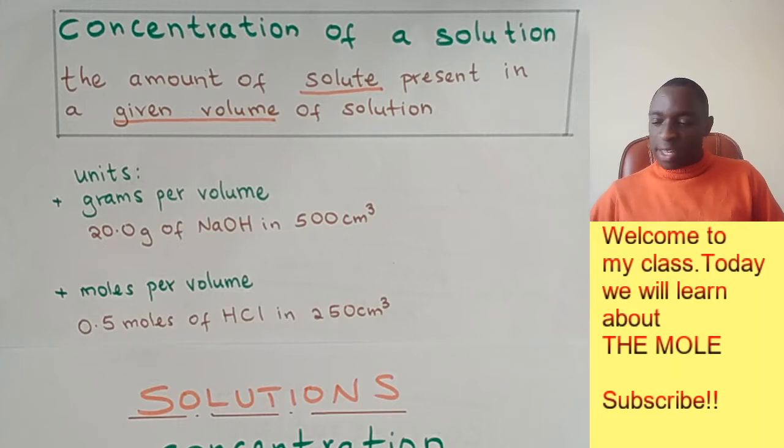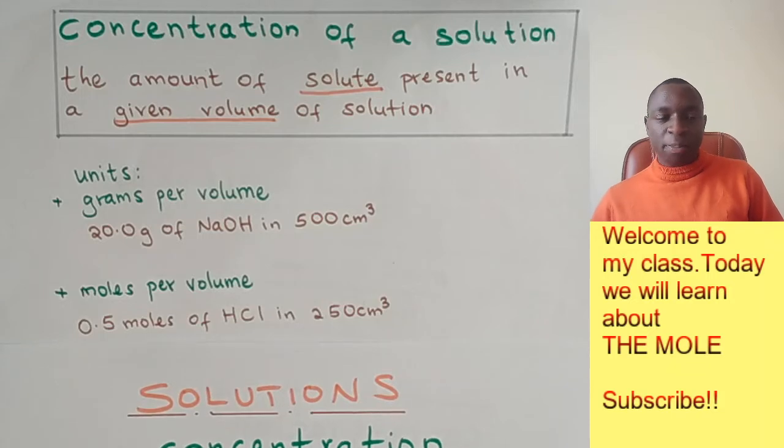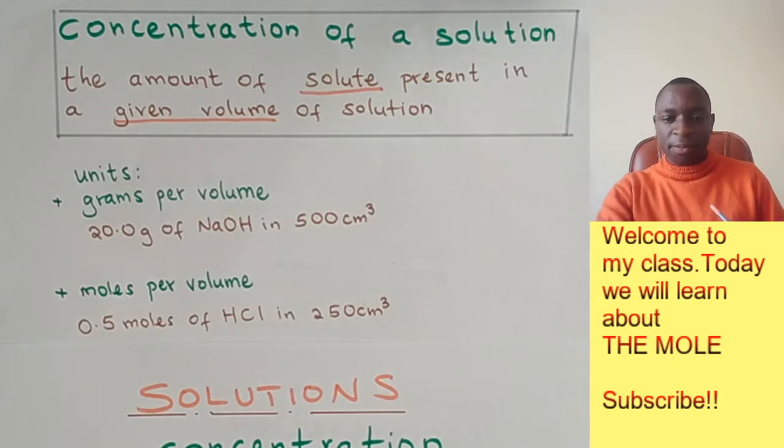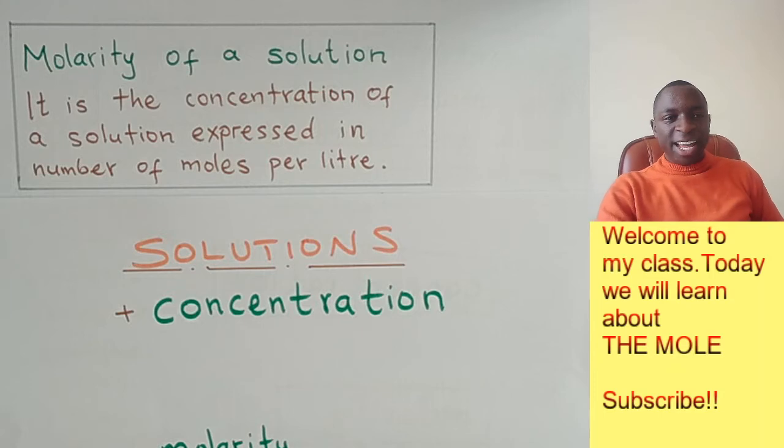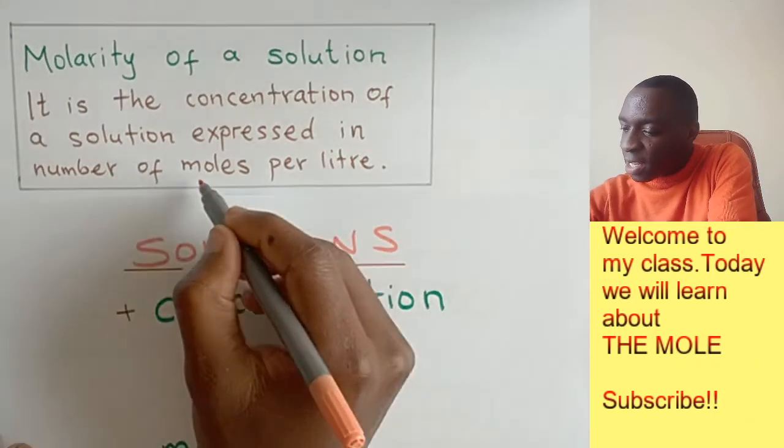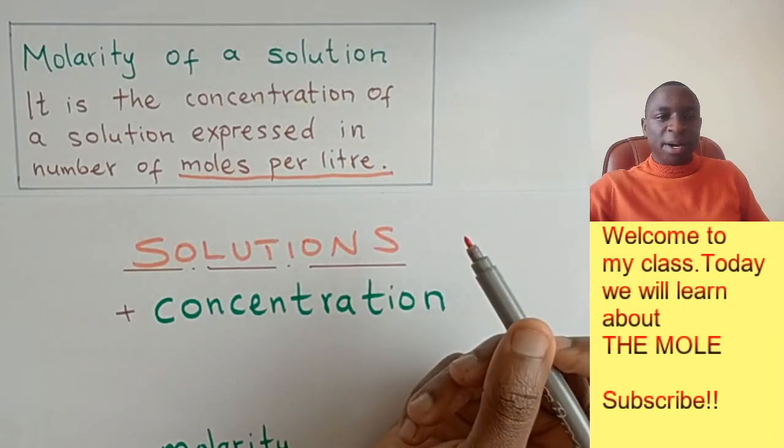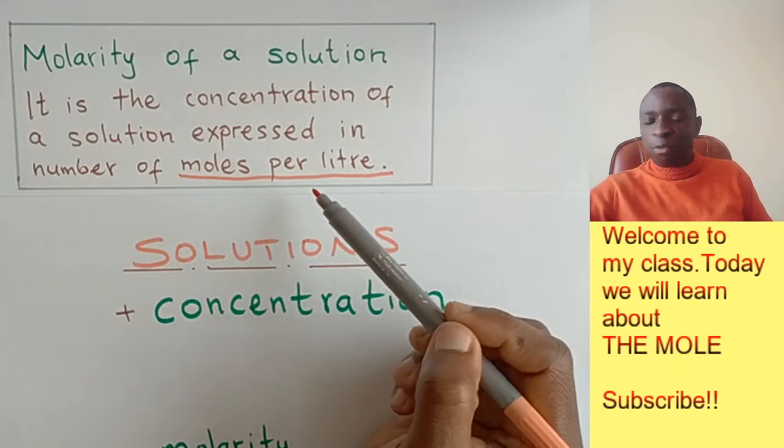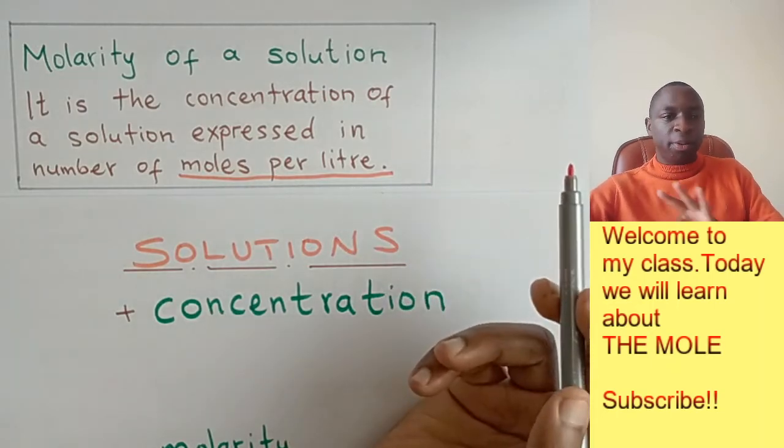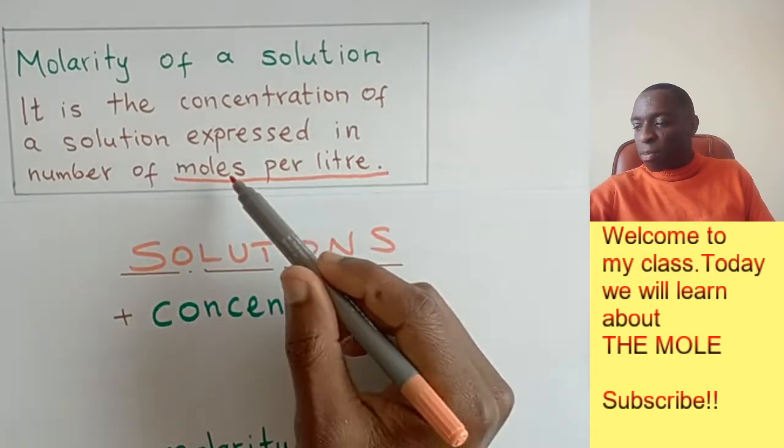So now that you have seen how to express the concentration of a solution, we need now to look at the next part, which is the molarity. Now, the molarity of a solution is actually the concentration of that solution, but only expressed in moles per liter. So the key for molarity is right there. It must only be expressed in terms of moles per liter. You cannot express it in terms of grams per volume or any other way. It must be moles per liter.